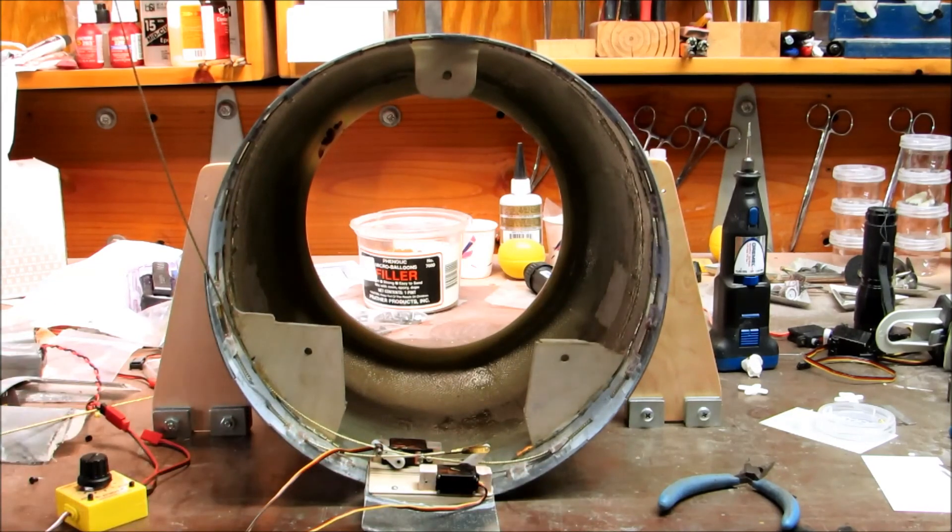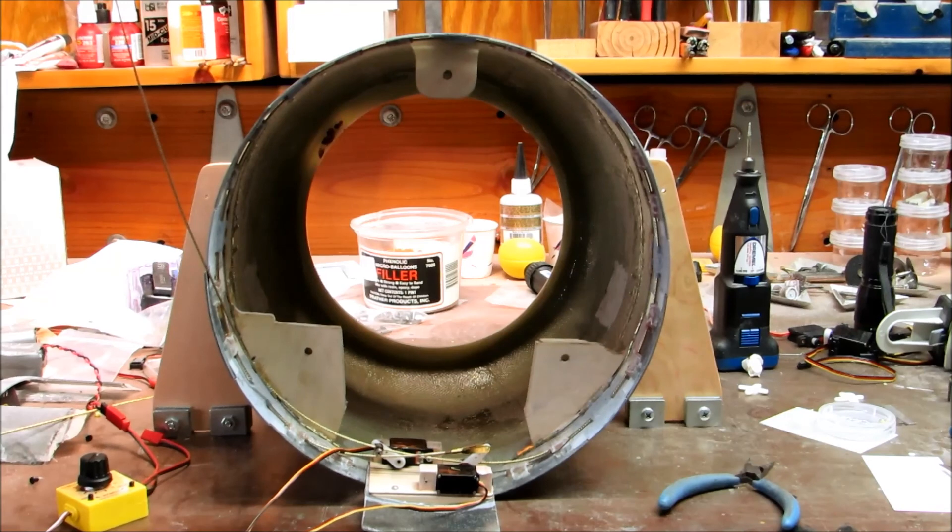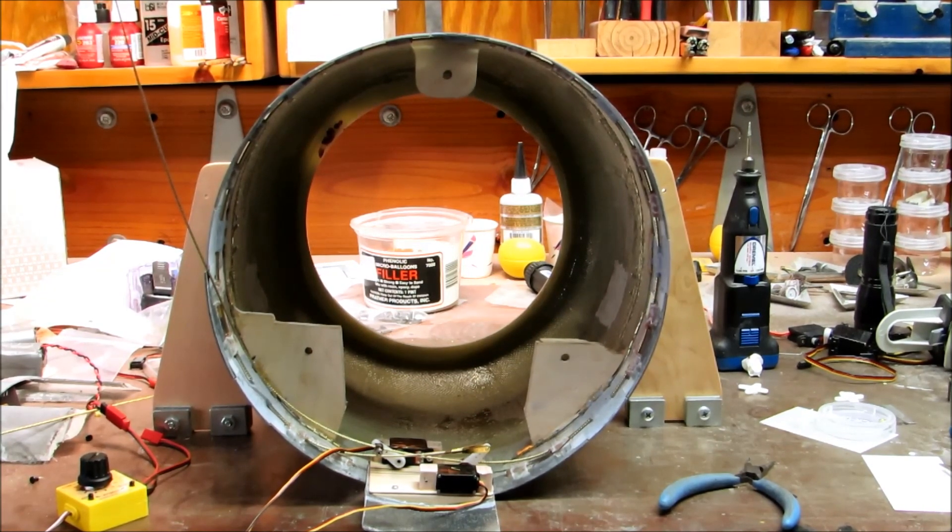Alright. That's it. That's cowl flaps for a F4U Corsair. This is the Zeroli. Later. I'll see you later.